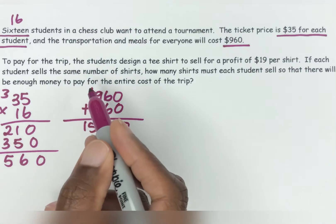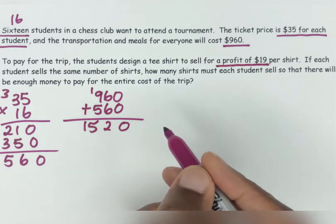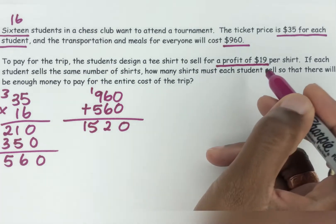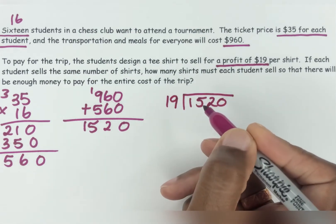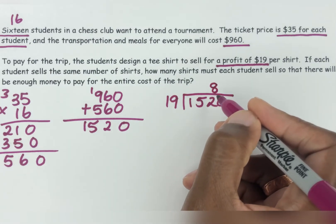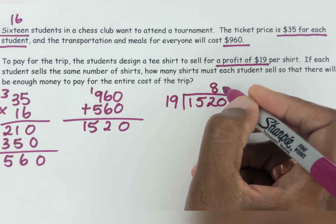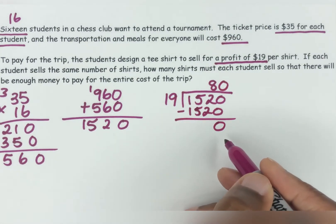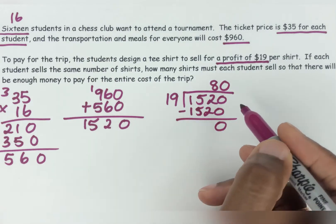So let's carry on. To pay for the trip, the students design a t-shirt to sell for a profit. They want to make a profit of $19 per shirt. So we have $1,520 and we have to divide that by the 19. So 19 into 1520 — 80 times 19 is 1,520. So you get 80.